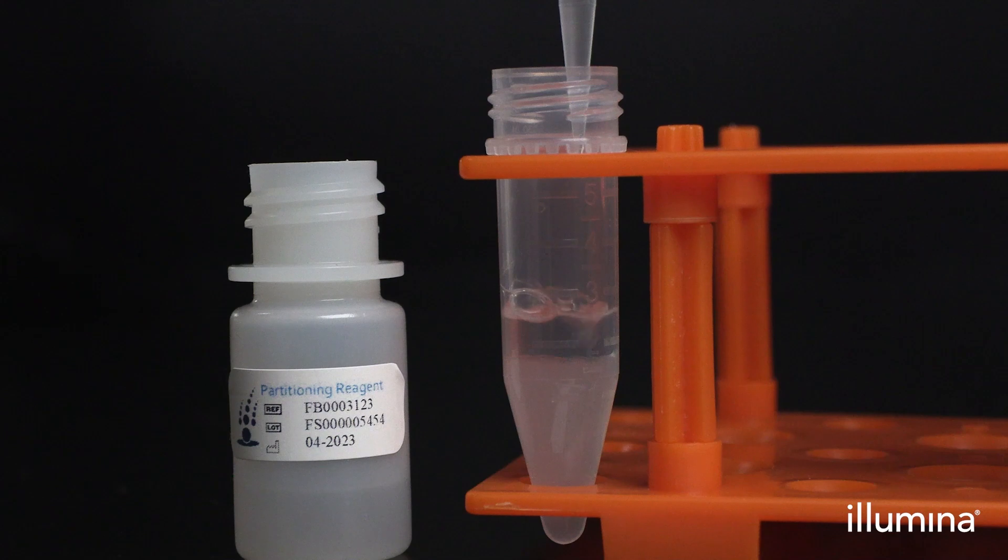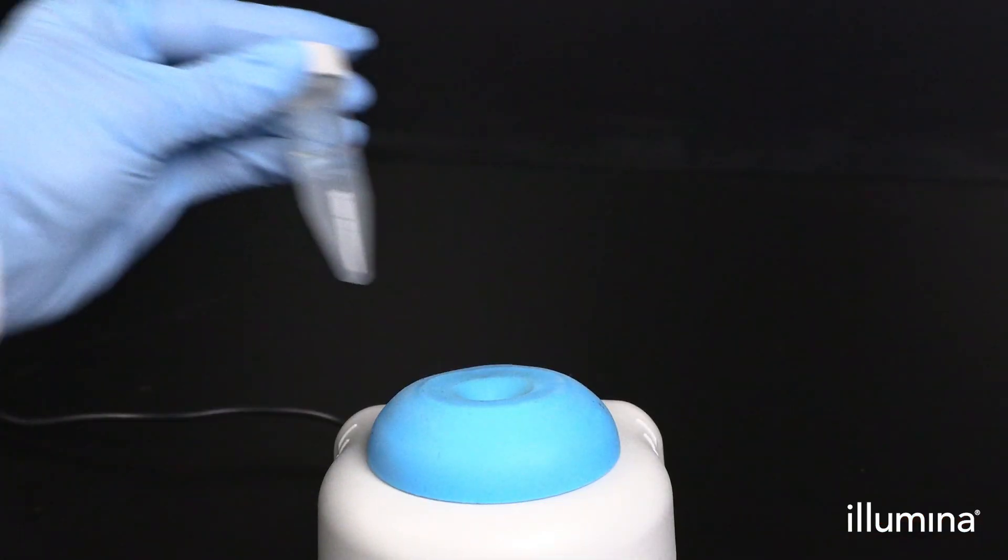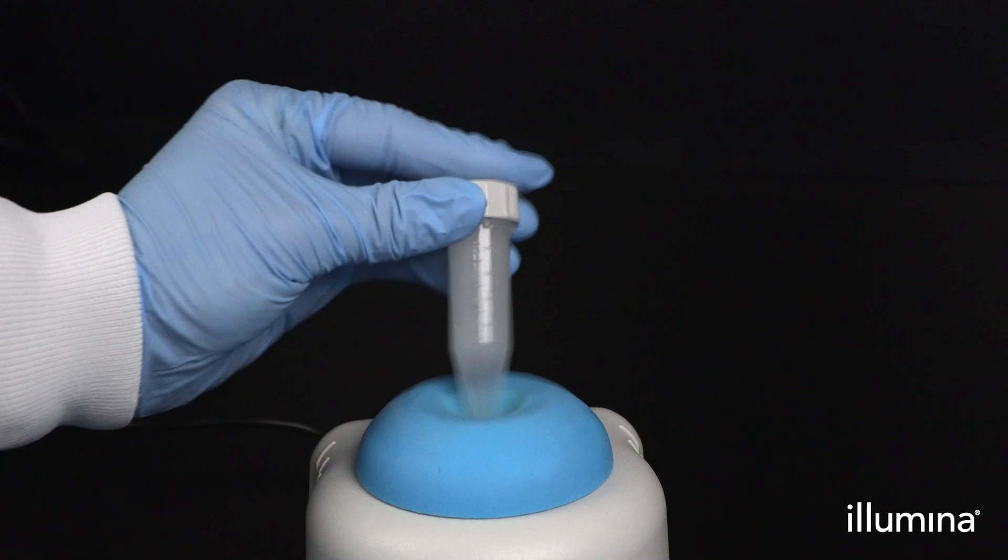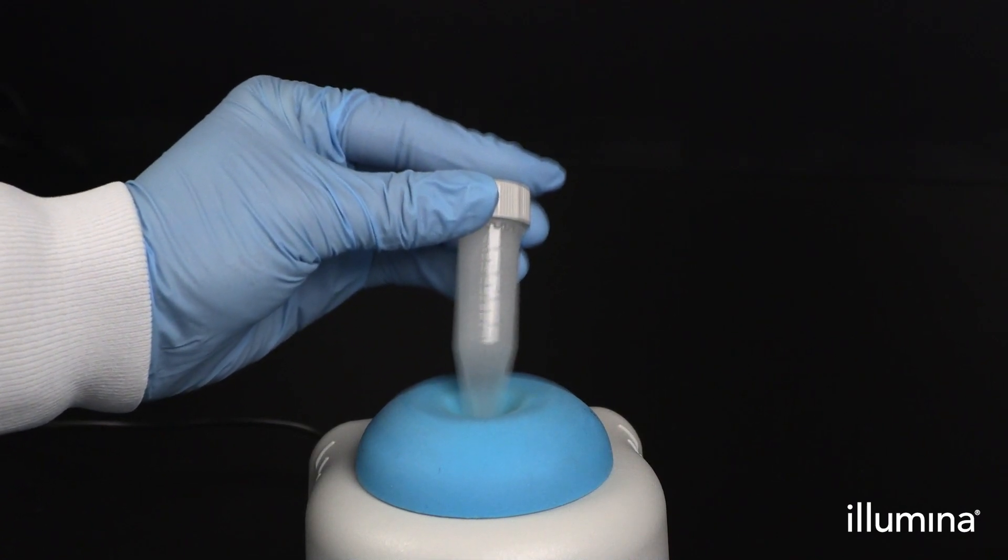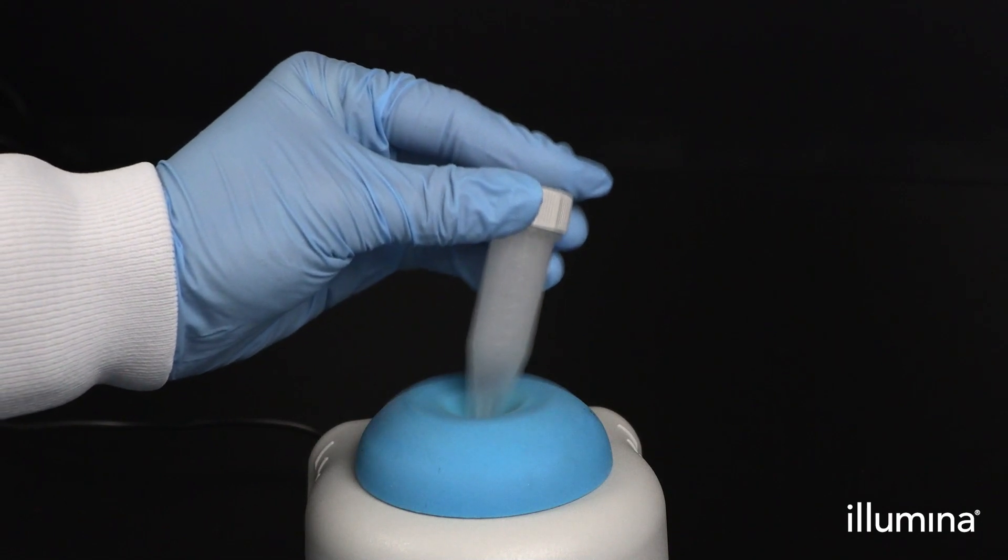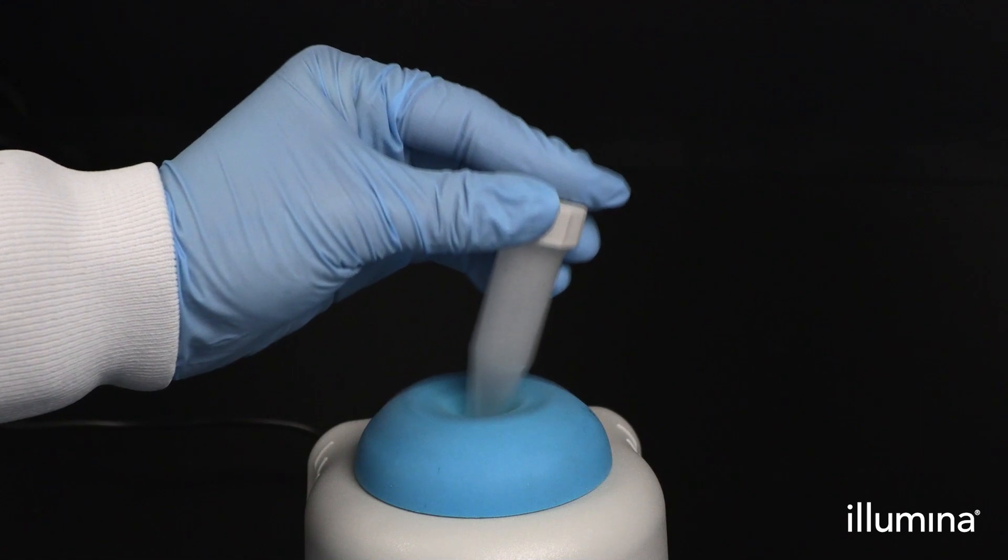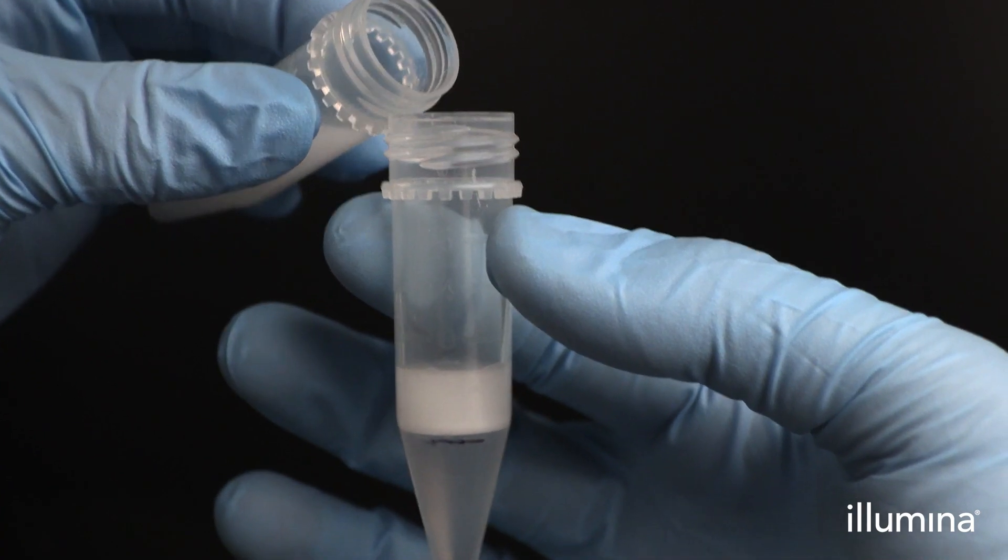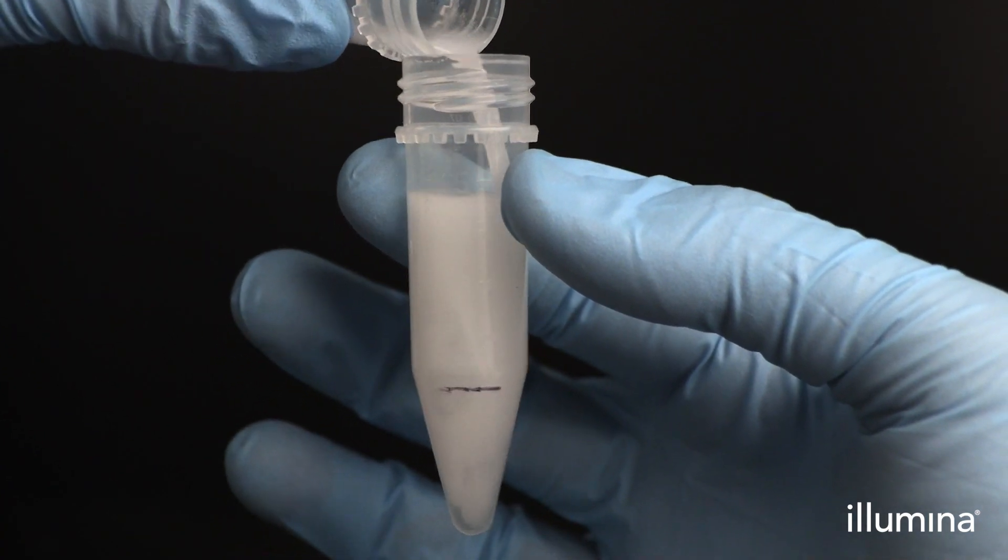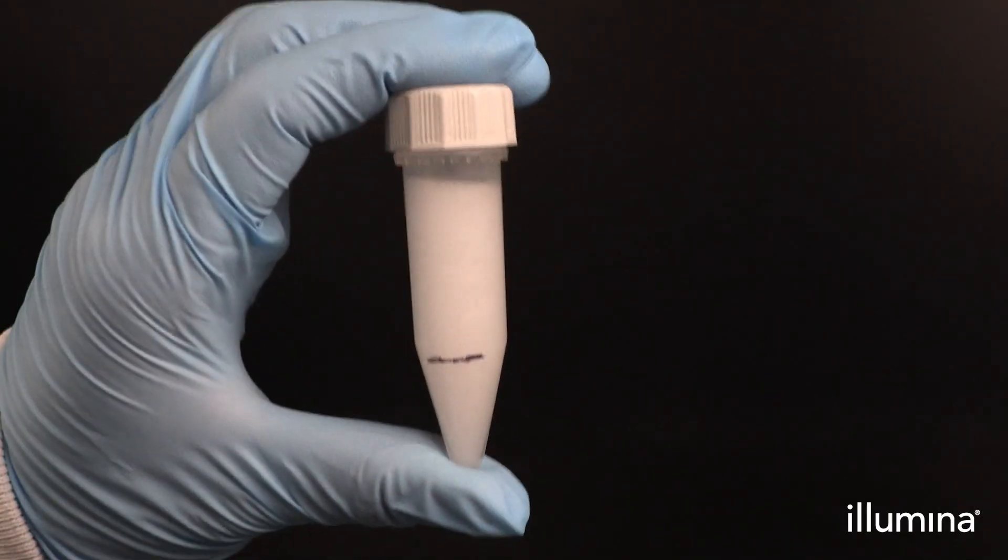Next, vortex the tube for 10 seconds at max speed on a standard benchtop vortexer to generate the chemical lysis emulsion. Immediately pour the entire chemical lysis emulsion into the PIP sample tube and mix by inverting at least 10 times.